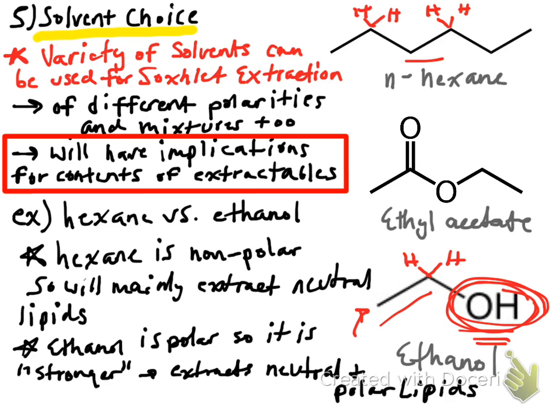Ethanol can extract neutral lipids because of its two-carbon tail, which has slight hydrophobic character, and its hydroxyl group helps it extract polar lipids. The hydroxyl group also helps ethanol permeate the cell wall, giving it better access to cellular lipids than hexane. Hexane, being immiscible with water, is repulsed by the aqueous cellular environment and therefore cannot extract as effectively from biological samples.